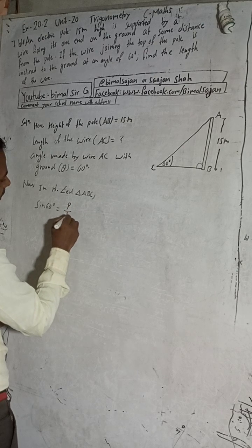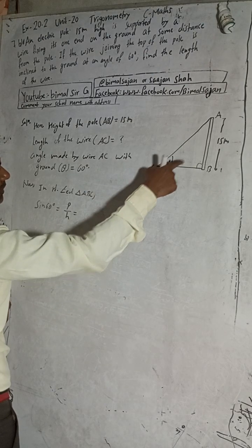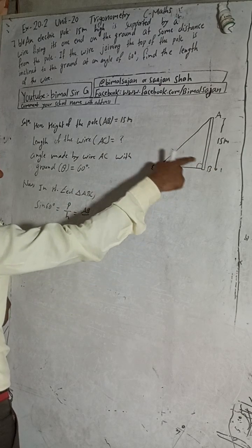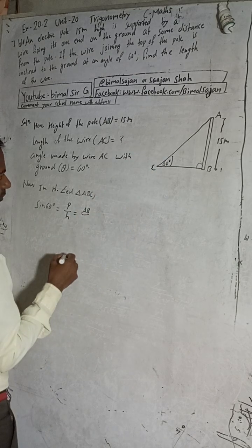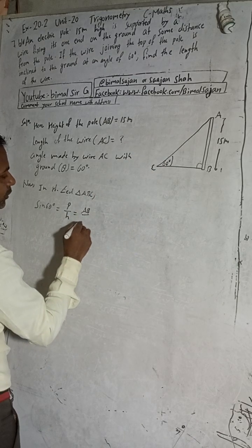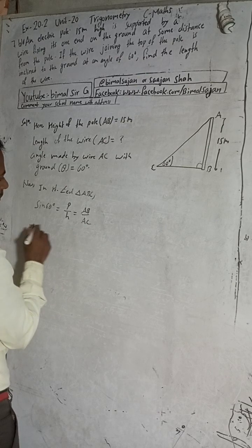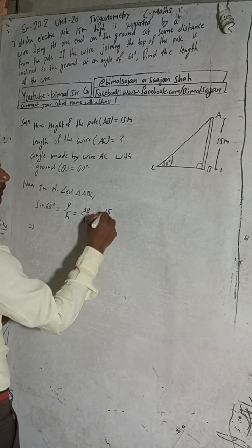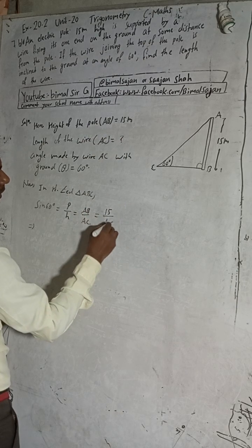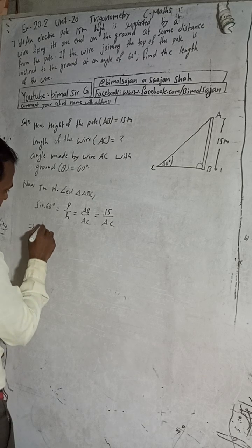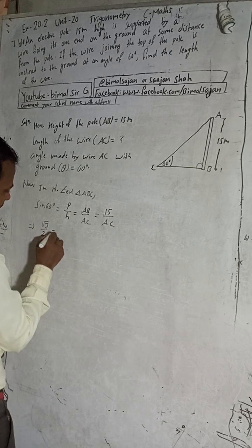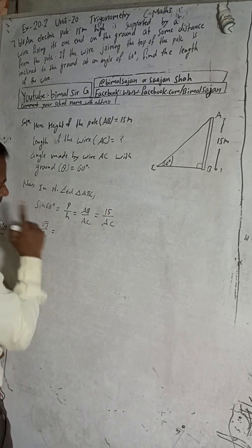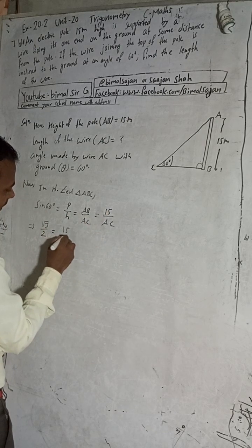Perpendicular with reference to 60 degrees is AB and hypotenuse is AC. We know AB equals 15 meters, so 15 by AC. And sin 60 degree value is √3 by 2. So this is 15 by AC. When you cross multiply, this will be √3 AC equals 30.